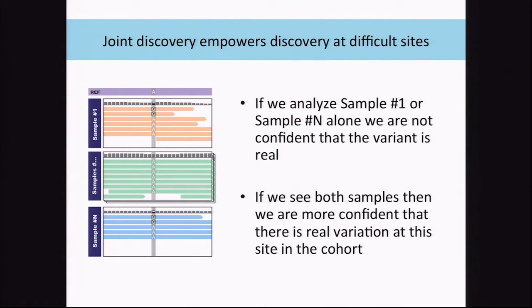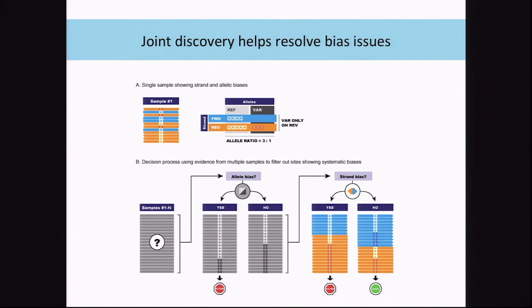For instance, we can detect variants that are represented poorly in some samples but are strongly seen in the entire cohort. We can have a set of priors to call them more confidently, to call less information, or to screen out artifacts. We see a variant with low evidence in one sample, but if we see that in many other samples, we might know that this is a true site of variation in our cohort. If we don't see it in other cohorts, we could tell that it's an artifact. Looking at many samples simultaneously also lets us resolve issues of sequencing bias and alignment bias, because we have many points of data.